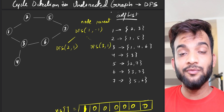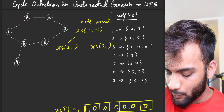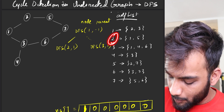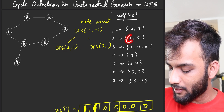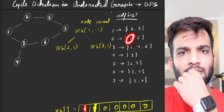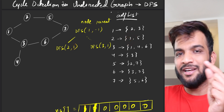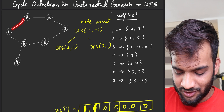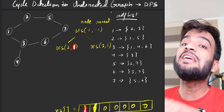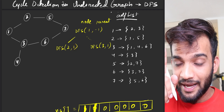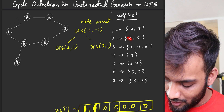Now we have DFS of node 2 — this is where you understand the concept of parent. The moment you reach 2, mark it as visited. The neighbor node of 2 is 1, and you see it's already visited. But wait — you came from 1, so if you came from 1 it's not a cycle. You can't call that a cycle. Since you came from 1 and it is visited, I will not say you came back to a node previously in the path. That's why we will not make a DFS call for node 1, but we will make a DFS call for node 5.